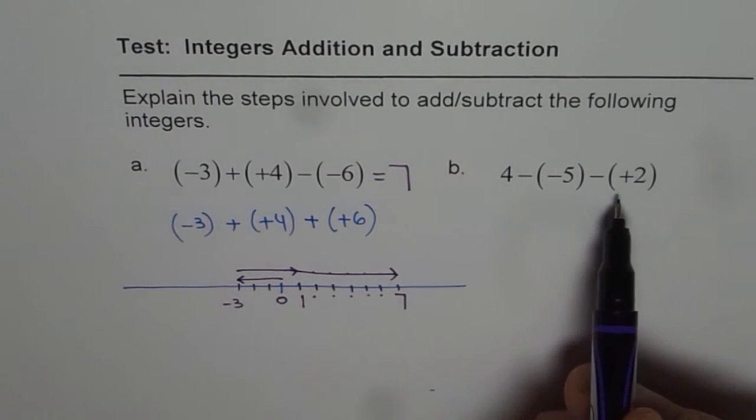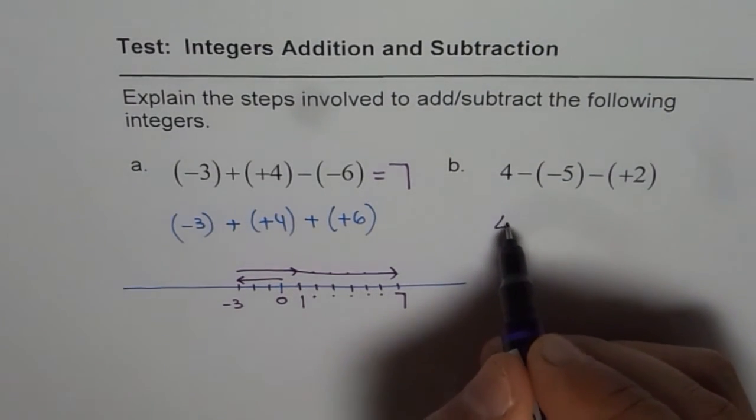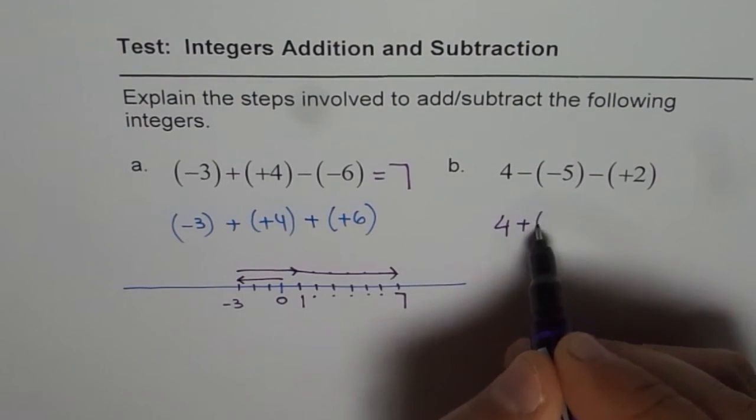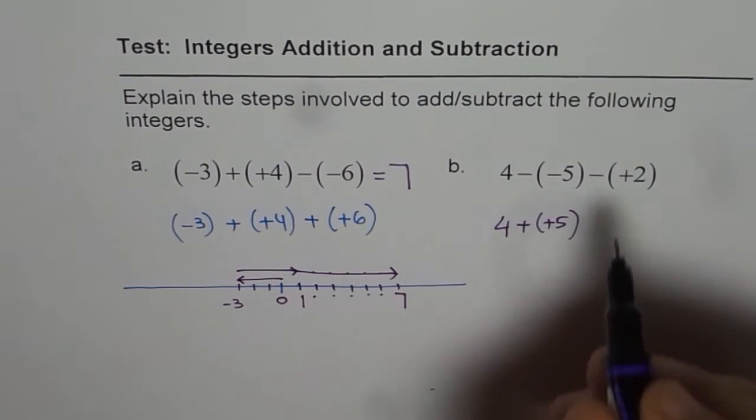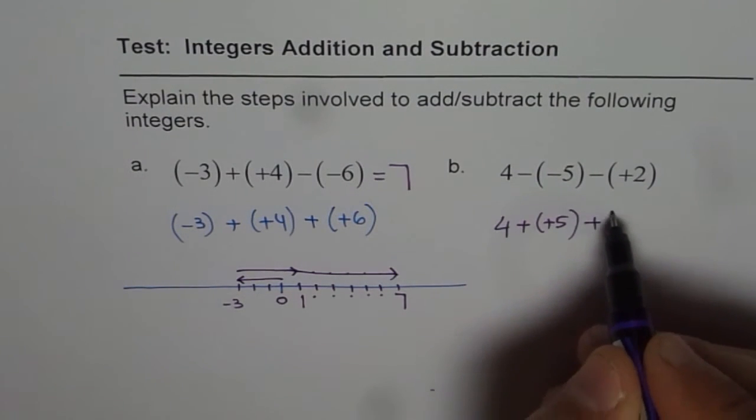So, this one I am leaving for you. Write as an addition statement, which could be, now here we could write four, minus minus becomes plus plus, right? Both becomes plus. And minus plus, you can flip, right? So, it becomes plus of minus.